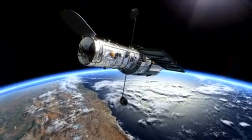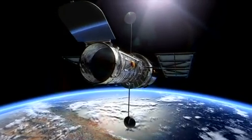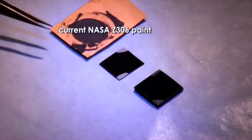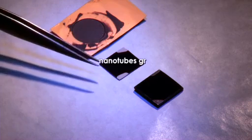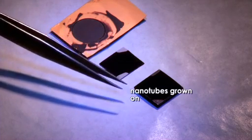One example where carbon nanotubes can enhance the performance of a scientific instrument in space is through their ability to absorb light. The Z306 paint is the blackest thing that we put on instruments right now. The fact that we're blacker than that makes us blacker than black in terms of performance.